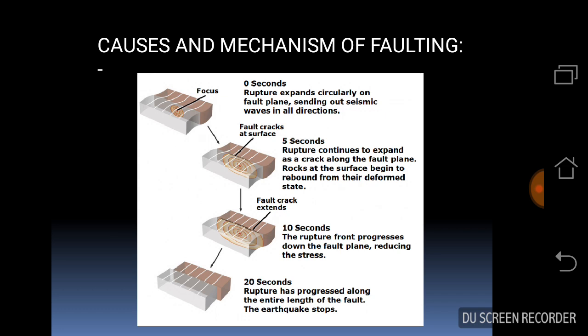The accumulated potential energy is released by the discharge of strain which is focused into a plane along which relative motion is accommodated—that is, the fault. This picture clearly shows that in the first stage, rupture expands circularly on the fault plane sending out seismic waves in all directions (the focus). In the second stage, the rupture continues to expand and the rupture front progresses down the fault plane, reducing the stress. In the last stage, the two blocks are separated from each other and the phenomenon that occurs is faulting.